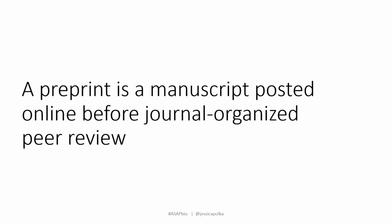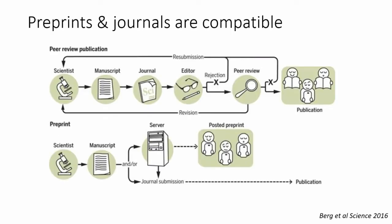For the purpose of this talk, a preprint is a manuscript posted online before journal-organized peer review. The term has meant different things at different times, but we see it really as equivalent to the way that physicists are using preprints on arXiv — completely compatible with journal publication. A preprint is simply a manuscript posted to a server online that is immediately accessible to all colleagues, usually during the time that same manuscript is going through peer review at the journal. This way we achieve the benefits of sharing immediately with our community members, getting feedback, and accelerating the process of science, while still undergoing certification by peer review.